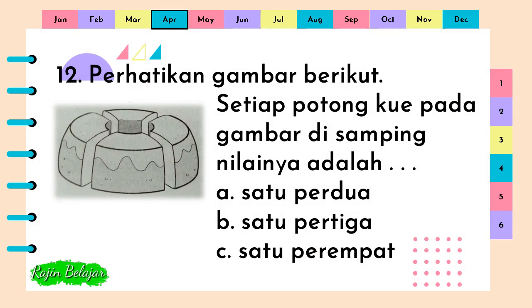Perhatikan gambar berikut. Setiap potong kue pada gambar di samping nilainya adalah titik-titik-titik. A. Satu per dua. B. Satu per tiga. C. Satu per empat. Jawaban yang benar adalah C. Satu per empat.